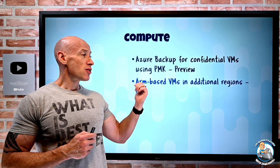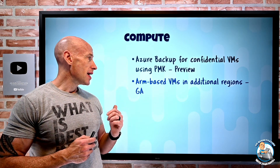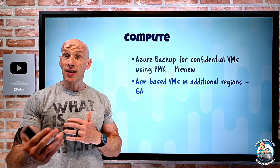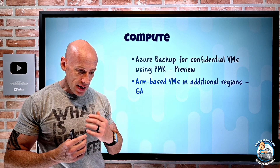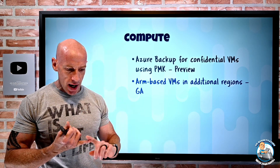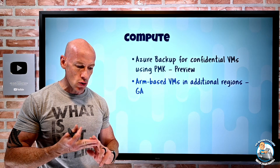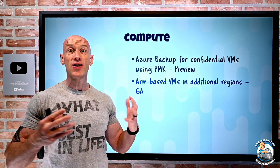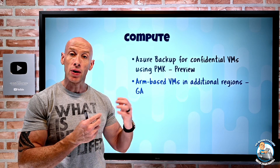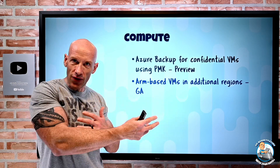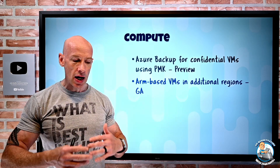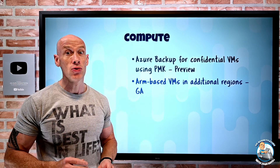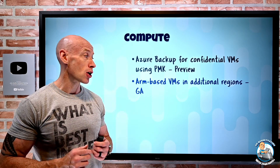ARM-based virtual machines are now available in additional regions. ARM provides fantastic price performance, and they've added West US, North Central US, UK South, and France Central. There are now 15 regions that support zone-specific deployment, so you can really get those availability zones to increase overall resiliency. AKS can now use these ARM-based nodes as well.